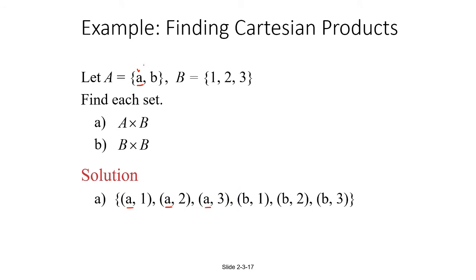That takes care of all of the pairs that start with A. We still need to find all the pairs that start with B. So we match B with each one of the second coordinates again: B with 1, B with 2, and B with 3. So this would be A cross B — the Cartesian product of A with B.